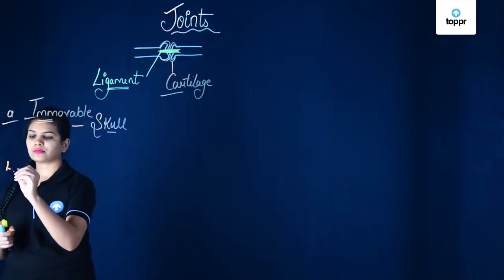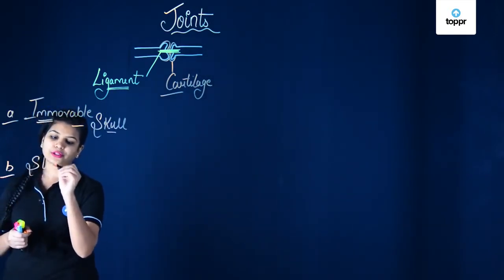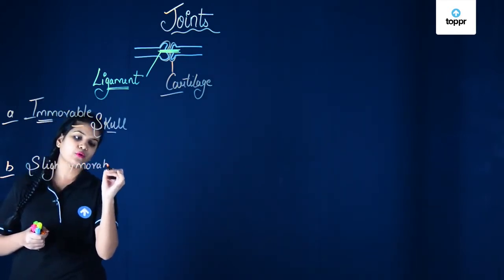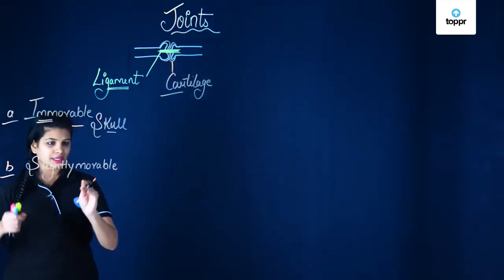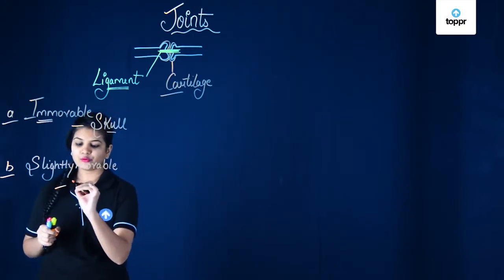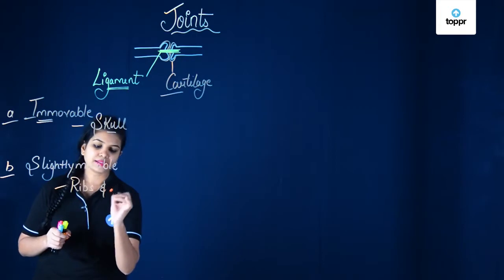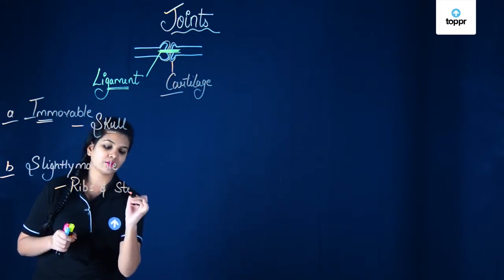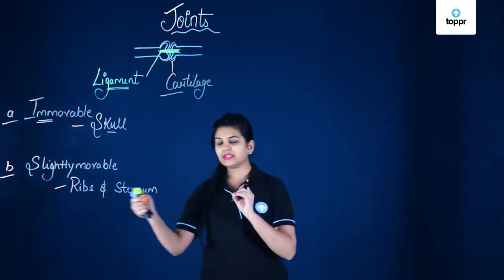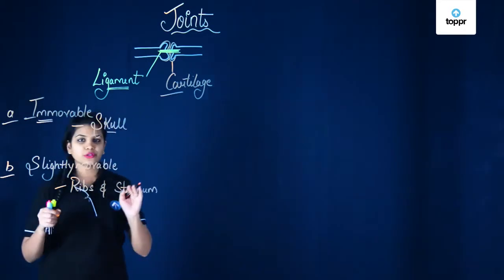Next would be the slightly movable joint. As the name suggests, this type of joint is observed where slight movement is allowed. This type of movement can be seen between the ribs and the sternum. The ribs connected with the sternum show very slight movement between these two, and hence we call this a slightly movable joint.